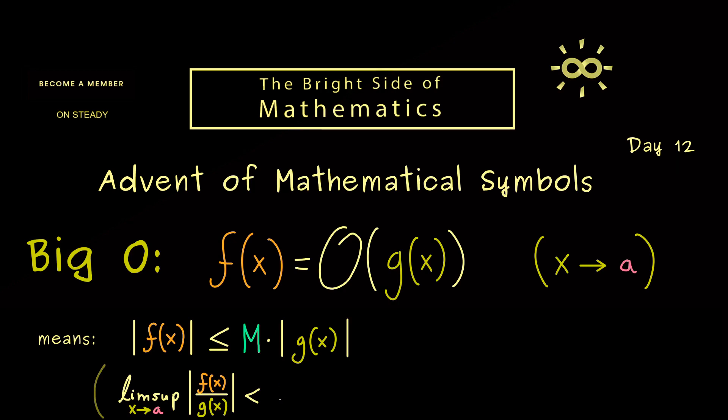And now this lim sup should be a finite number so we can write less than infinity. So you see it means the same thing. We compare the growth weight of f with the growth weight of g. And in the case that f would grow faster then this whole thing here would go to infinity.